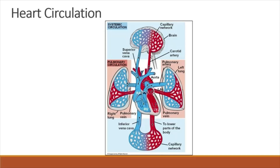When the left ventricle contracts, oxygenated blood is pumped into the aorta. The aorta branches off into arteries that carry blood to the forelimb and upper part of the body, and the hind limb and lower part of the body.